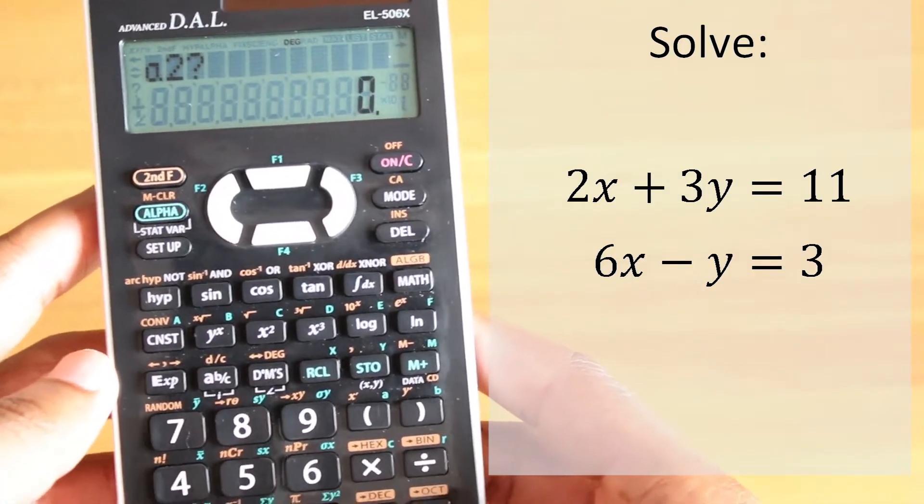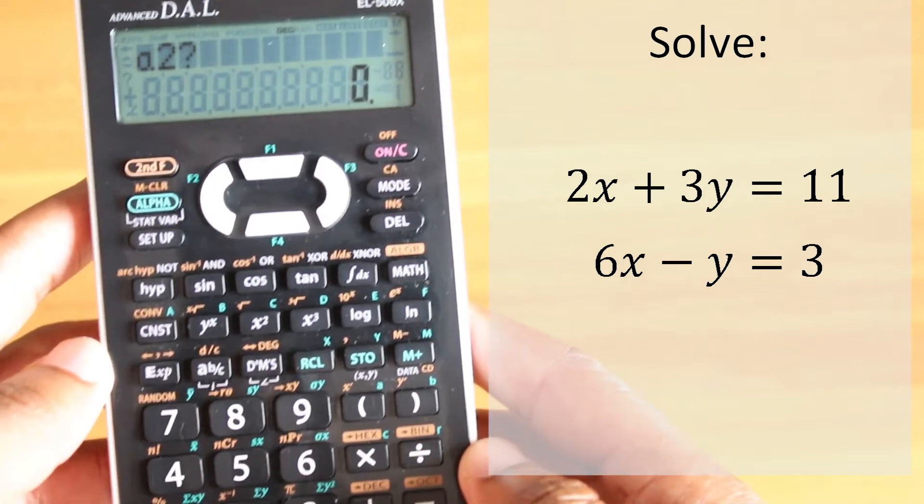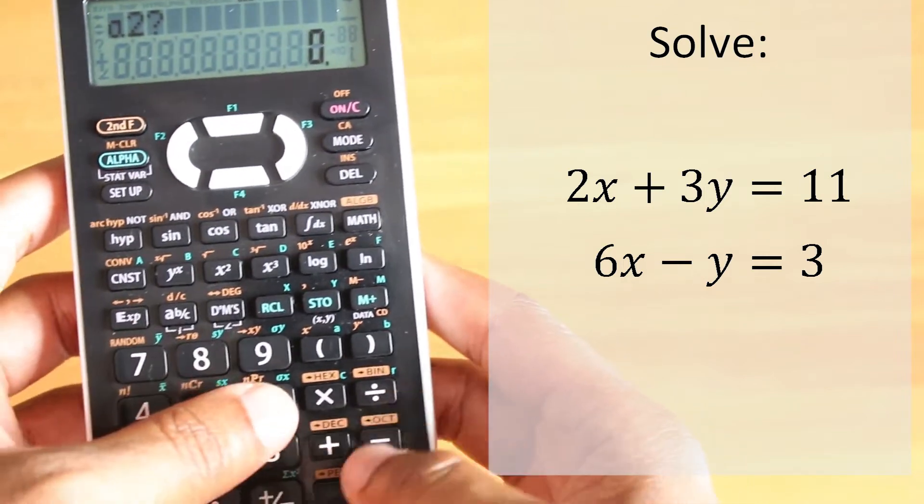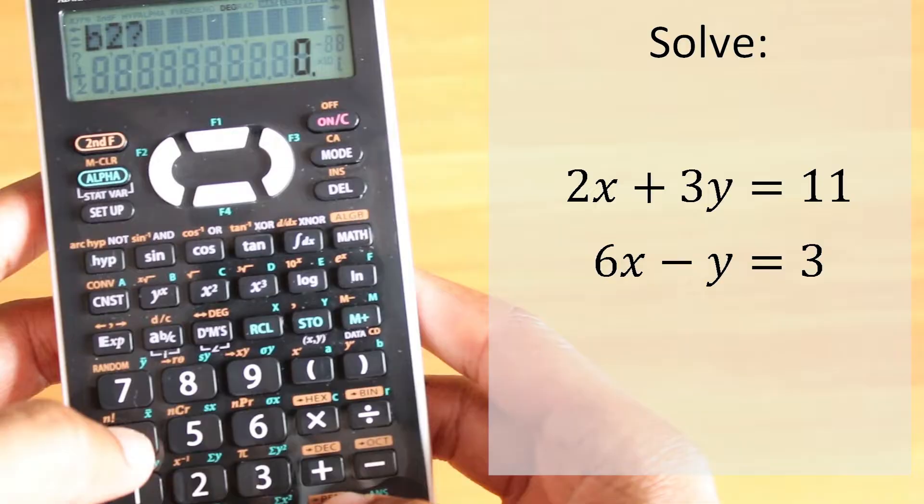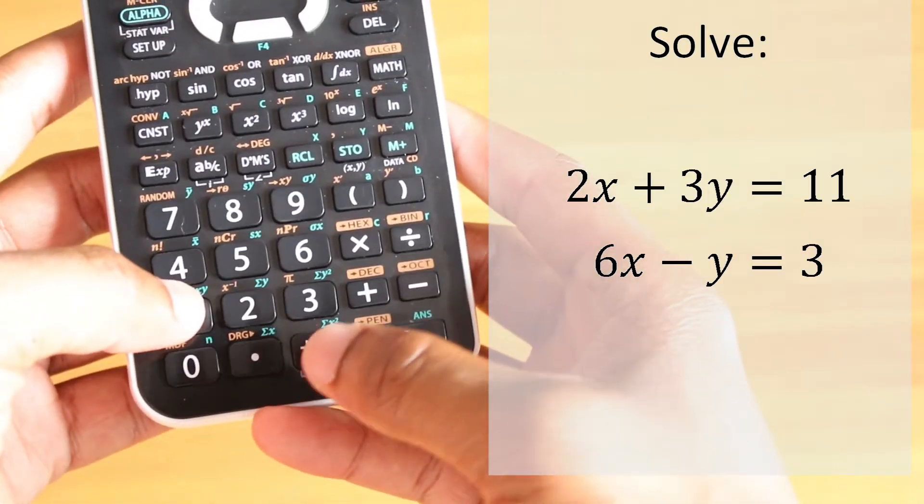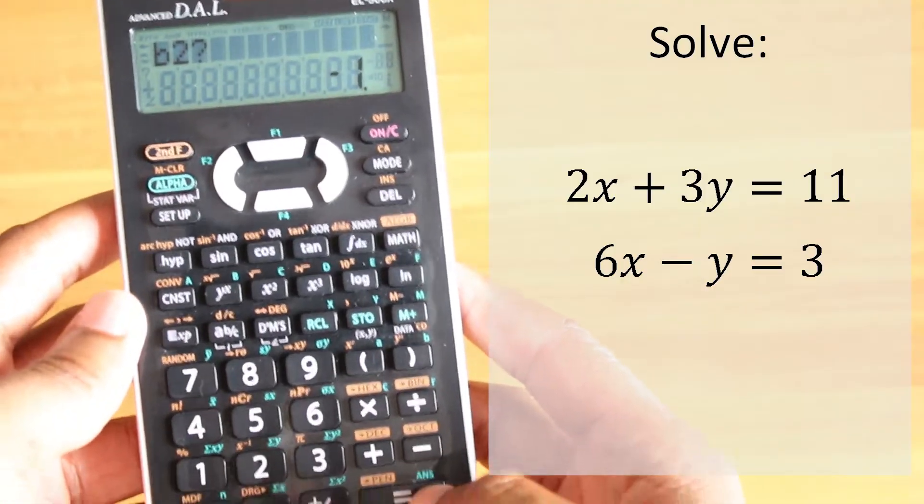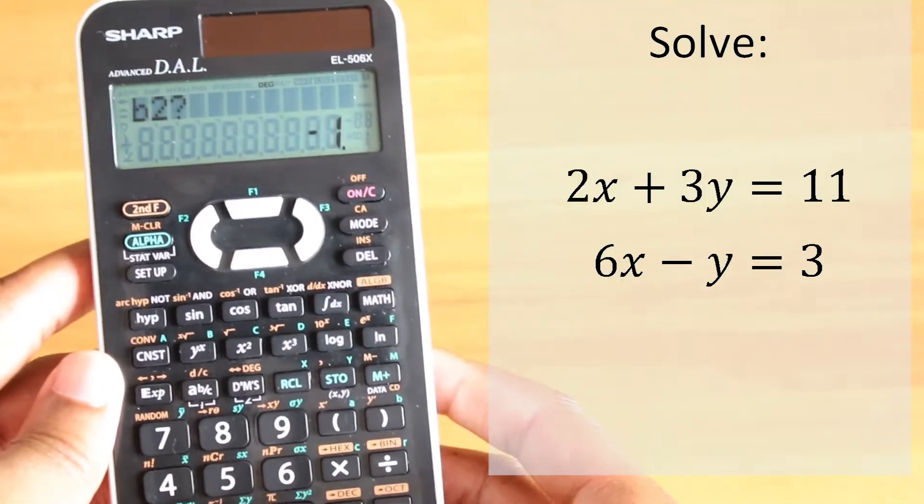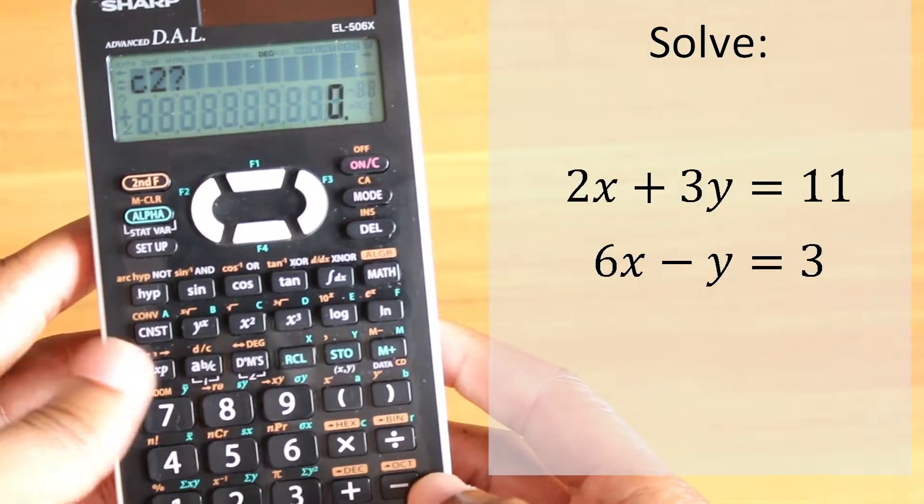a2, so this is for the second equation. You can see that's 6 and negative 1, so the negative sign comes in handy again. Then negative 1, and equal sign to access enter, and c is going to be 3.